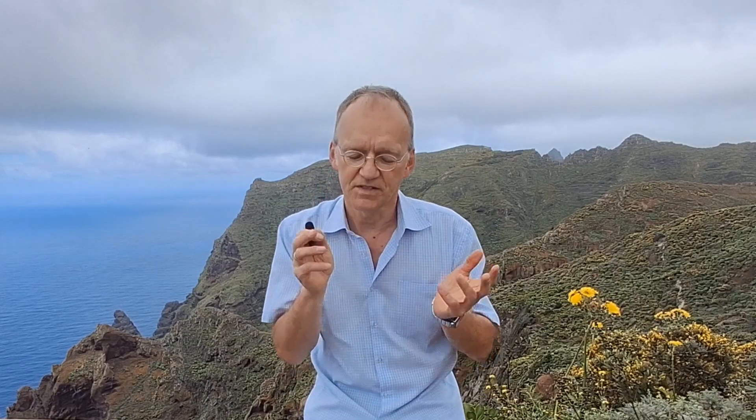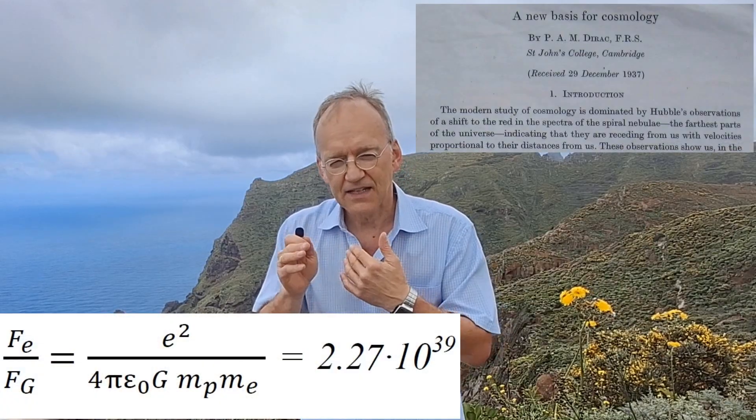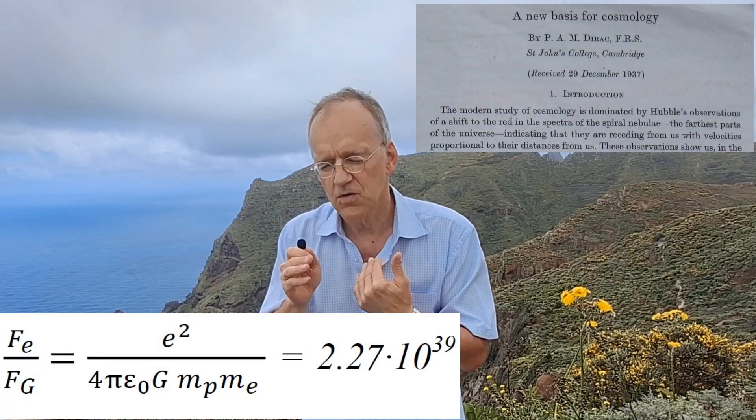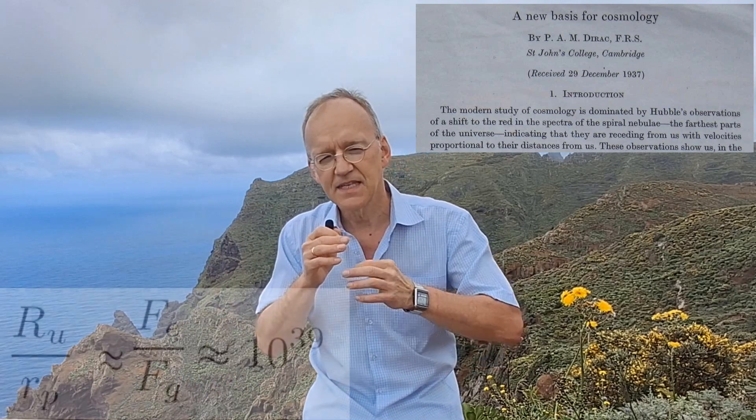Welcome to Real Physics and this little series of superhuman intelligence benchmarks. Today I'm going to talk about Dirac's second large number hypothesis. Just a brief recap: the first of Dirac's large number hypotheses is the ratio of the electric and the gravitational force, which is 10 to the 40, and is related to the size of the universe and the size of the proton.